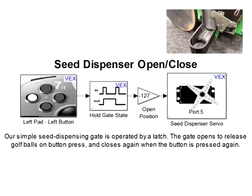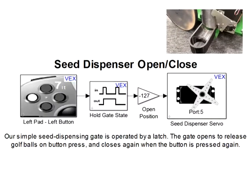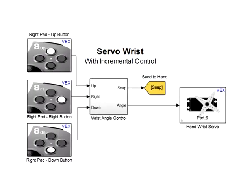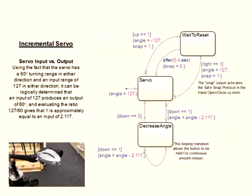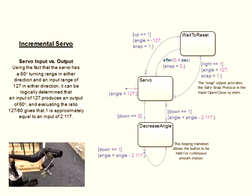The simplest section of the Harvest program controls our seed release gate using a latch. The wrist uses advanced incremental servo programming that allows it to angle itself to any point within its 120 degree range of motion. It can also snap to its fully raised and fully lowered positions to rapidly pick corn and deposit it into the robot's collection bucket.